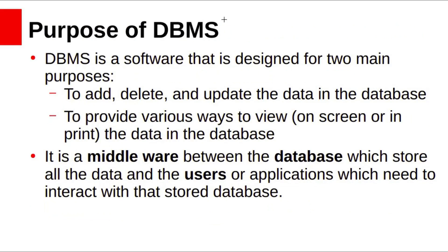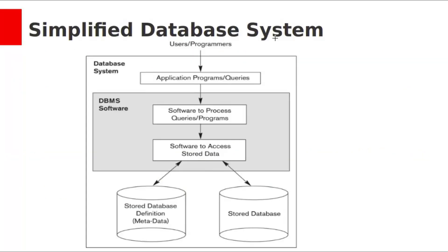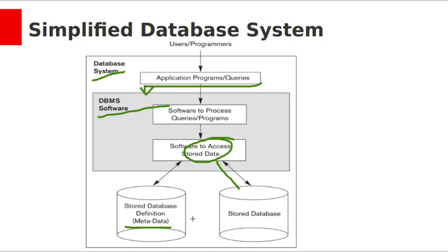DBMS is designed for two main purposes: first, to add, delete, and update data in the database; and second, to provide various ways to view the data within the database. DBMS is a middleware between the database and the users. In a simplified database system, application programs interact with the DBMS software, which in turn uses the file system to query the database. DBMS uses metadata to retrieve data from the database, where metadata stores the structure of the database.